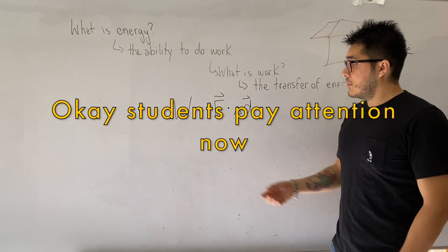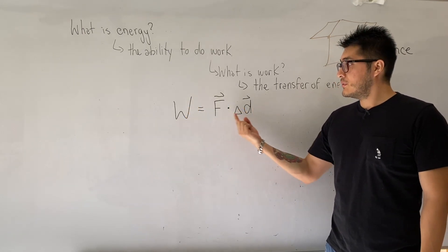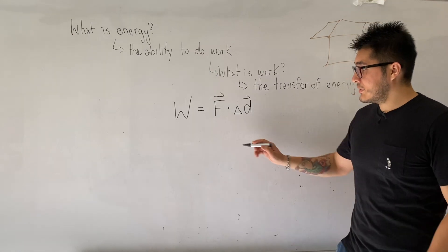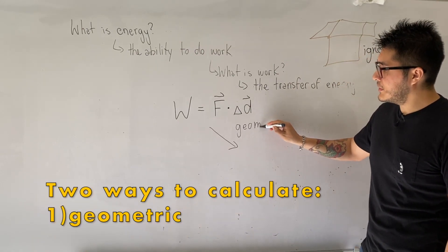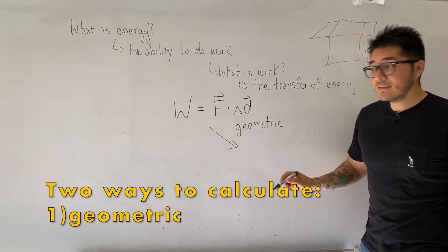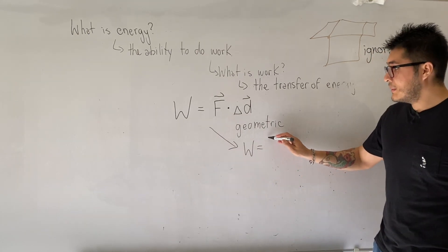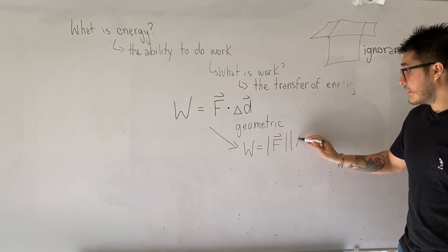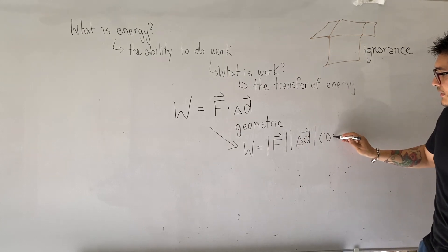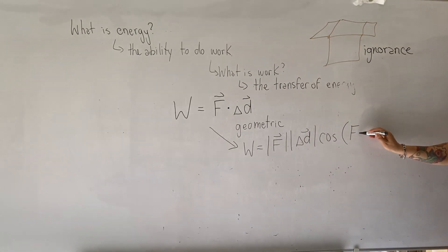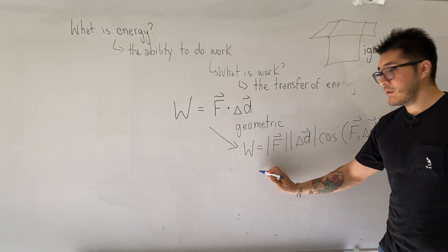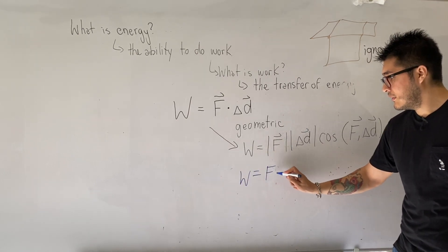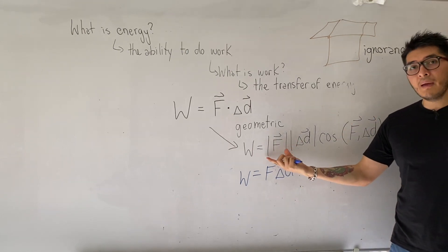Now let's go back to our formula for work. Work is the dot product of the force with the displacement vector. This is a new mathematical operation, and we can have two ways to calculate it. The first way is called the geometrical way, and that's going to require us to think of the magnitudes. So it's going to be the magnitude of the force, the magnitude of the displacement, times cosine of the angle formed when the force vector and the displacement vector are joined tail to tail.